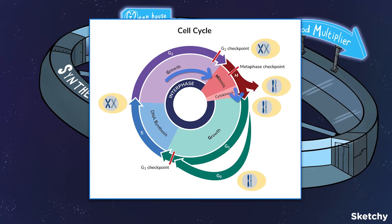A cell spends most of its life in interphase. Interphase is further divided into G1, S, and G2.